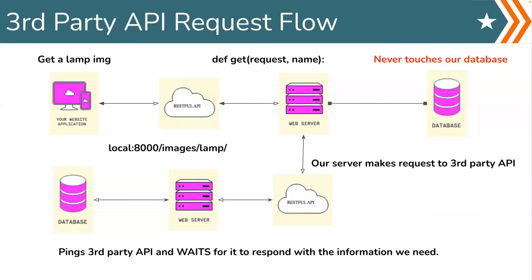The user makes the request, it goes to our EC2 instance which is deployed, then communicates to our server. Our server says, 'I don't need to communicate with my own database because I'm going to send this somewhere else.' It sends the request to another site, like the PokeAPI. The PokeAPI then runs its views, grabs the image for whatever Pokémon we want, returns it back to our server, and our server returns that to the client — never touching our own database.